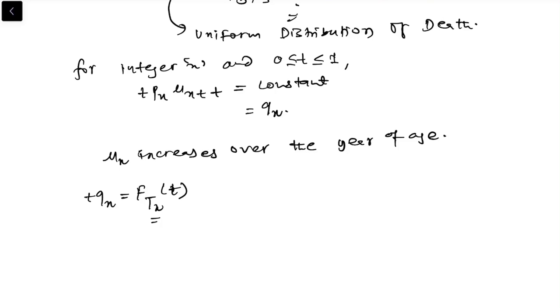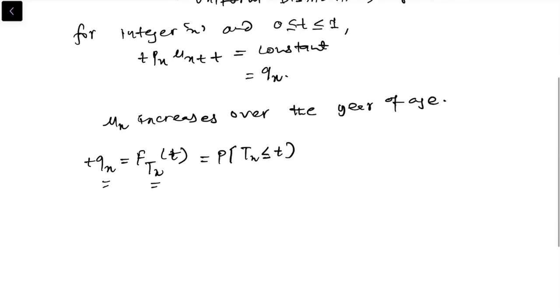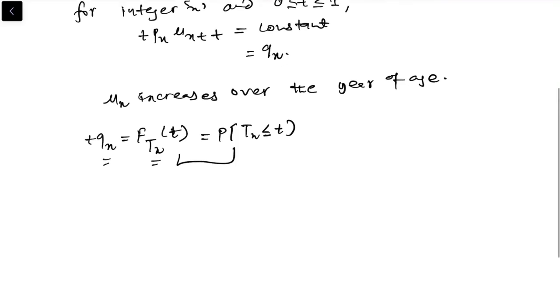So tqx is the CDF of the random variable tx. We can also write this as tx less than or equal to t. These two notations are basically the same.